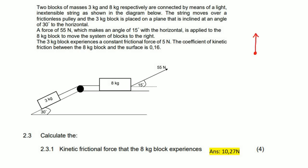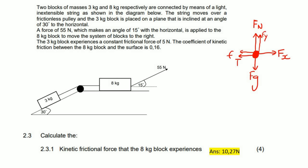Redrawing the free body diagram with components: we have the normal force, friction force, tension force T, gravity FG, and then the applied force split into its X-component and Y-component. Those are the different forces acting on the eight kilogram block.